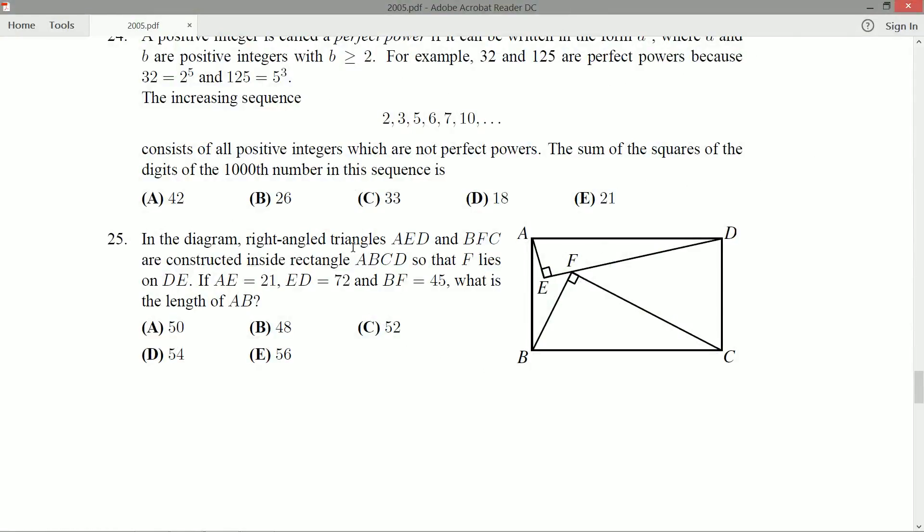Question 25. In the diagram, right-angled triangles AED and BFC are constructed inside rectangle ABCD so that F lies on DE. If AE is 21, ED is 72, so we know two of the legs of that triangle, and BF is 45, what is the length of AB?